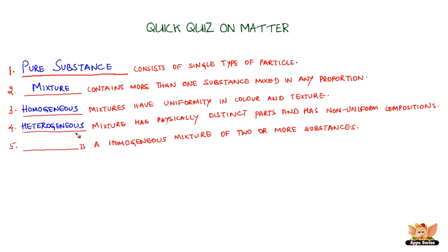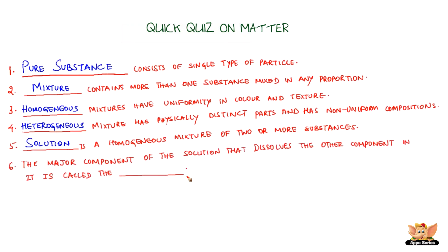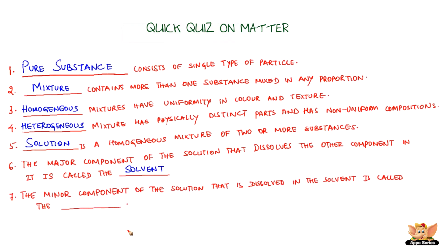A solution is a homogeneous mixture of two or more substances. The major component of the solution that dissolves the other component is called the solvent. The minor component that is dissolved in the solvent is called the solute.